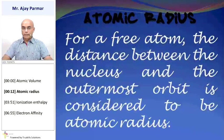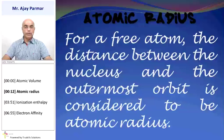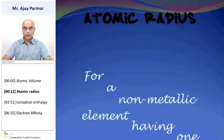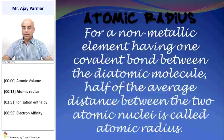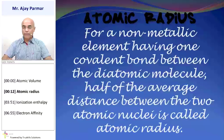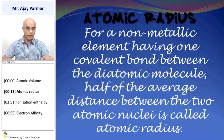For a free atom — that means an atom which does not require any type of bonding — the distance between the nucleus and the outermost orbit of that particular atom is considered to be the atomic radius. But if it is a non-metallic element having a single covalent bond between two diatomic molecules, then half of the average distance between the two nuclei of those two atoms is considered to be the atomic radius.